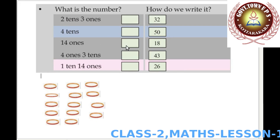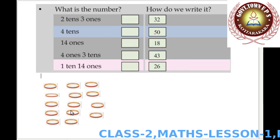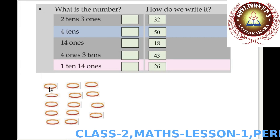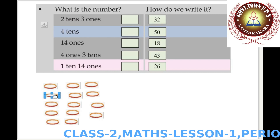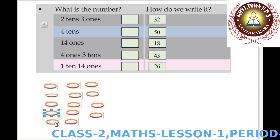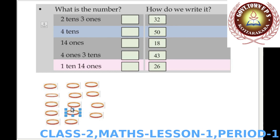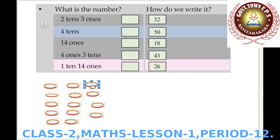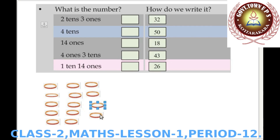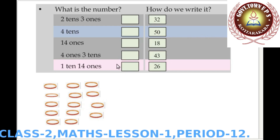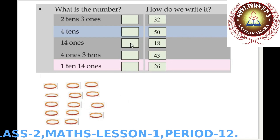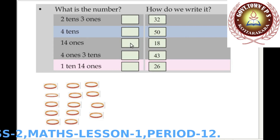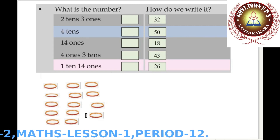Now 14 ones: we take one bangle at a time — 1, 2, 3, 4, 5, 6, 7, 8, 9, 10, 11, 12, 13, 14. Total: 14 ones is 14 bangles.